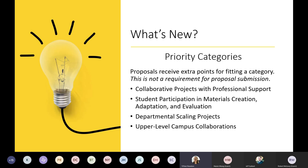This round's first priority category is collaborative projects with professional support. In this case, the project would include at least one team member outside of the course instructors — it might be an instructional designer, a librarian, or a web designer. It's meant to encourage collaborations with professionals who have been shown on past grants to help produce better results.